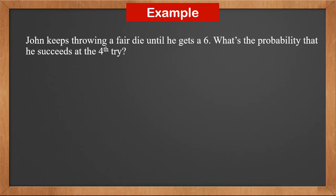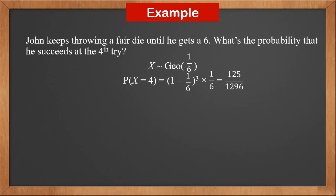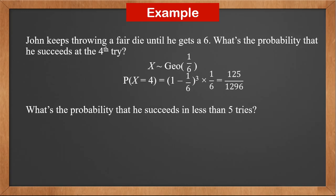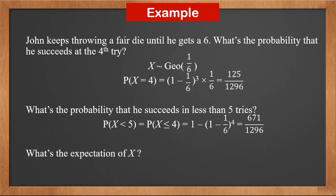John keeps throwing a fair die until he gets a 6. What's the probability that he succeeds at the 4th try? This is a geometric distribution and p is 1 over 6. So P(X = 4) is (1 minus 1/6) cubed times 1/6, which is 125 over 1296. What's the probability that he succeeds in less than 5 tries? P(X < 5) equals P(X ≤ 4), which is 1 minus (1 minus 1/6) to the power 4, giving 671 over 1296. The expectation of X is 1 over p, so it is 6.